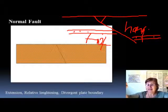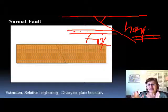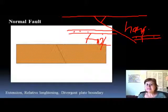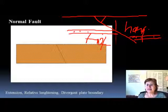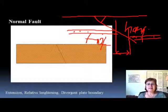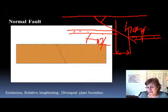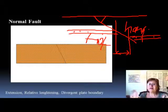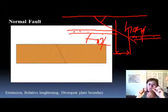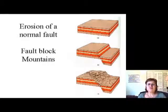Another way to recognize a normal fault: normal fault means relative lengthening, a divergent plate boundary with tensional force. The amount of lengthening is shown by the missing layer — you can see this layer on one side is the same layer on the other side, but there is an area where the layer is actually missing. That missing area clearly shows lengthening and a divergent plate boundary, which means this is a normal fault.